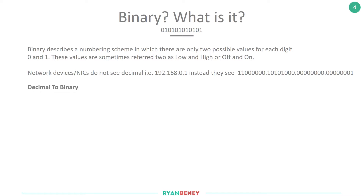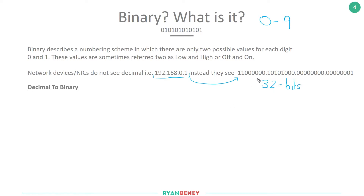You can see a decimal IP address split by the four octets, and beside it the 32 bits showing how networking devices interpret that address. Binary is a numbering scheme that allows only two possible values — zero and one, sometimes referred to as low and high, or off and on. Because decimal has up to ten values (zero to nine), we need a conversion table to map those values into the two-value binary system.